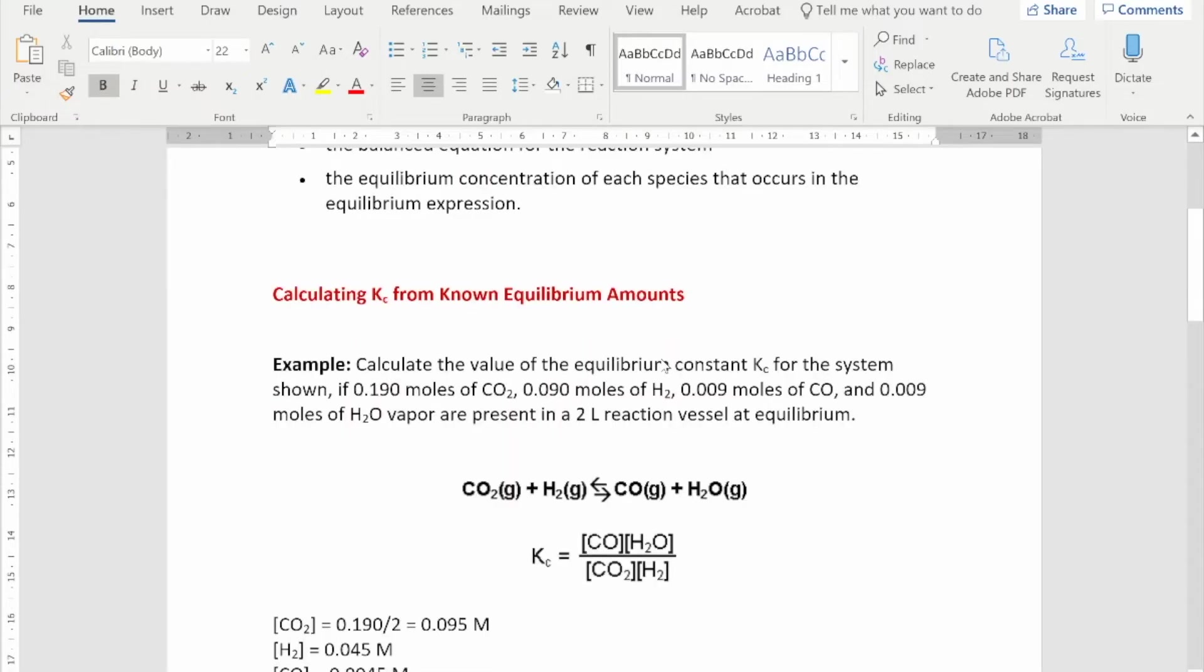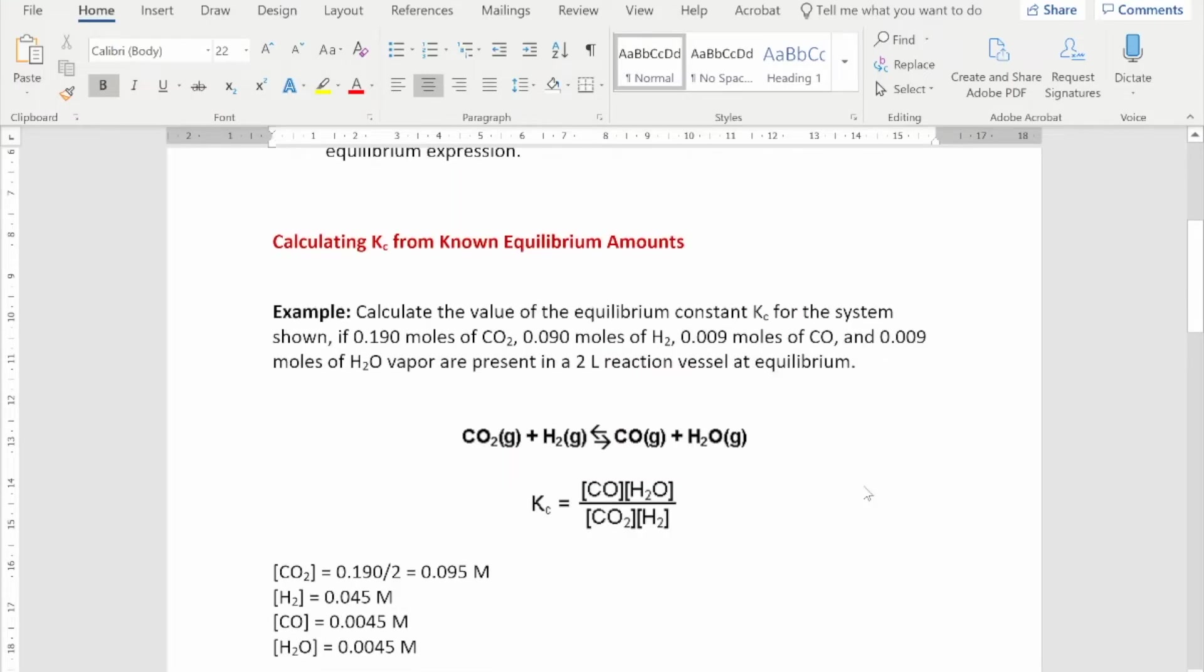First worked example is calculating the value of Kc if you are given the equilibrium quantities of CO₂, H₂, CO and H₂O and the vessel volume is two liters. This is your equation and Kc is the product of course on the top over the reactants on the bottom. All concentrations must have the power according to the value in the stoichiometric equation. So in this case, obviously they're all ones, so each concentration is to the power of one.